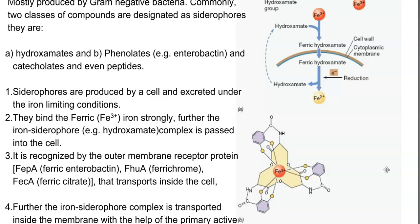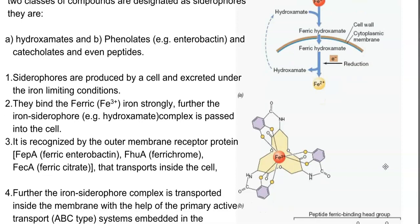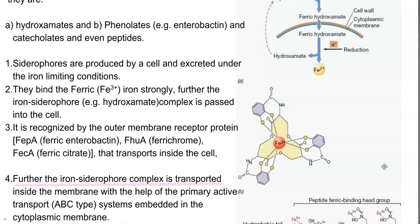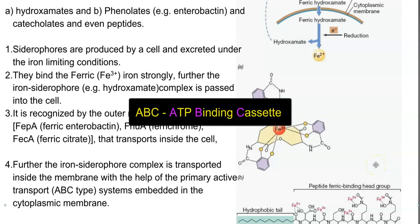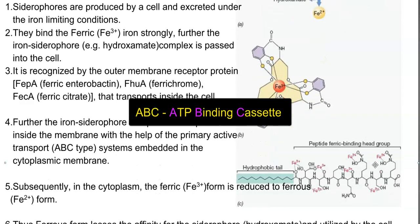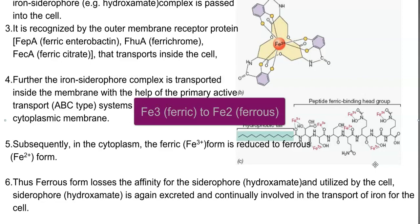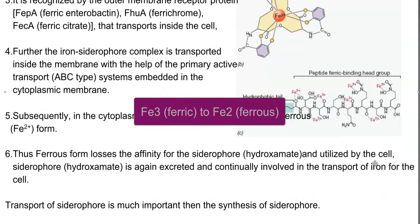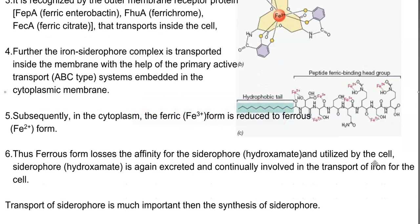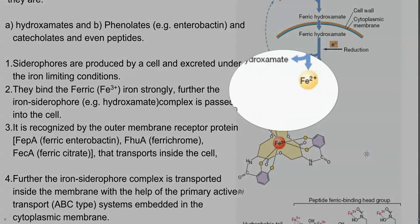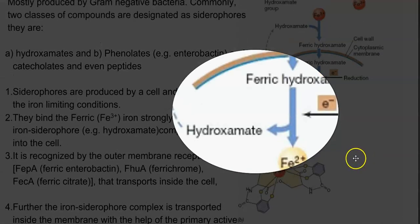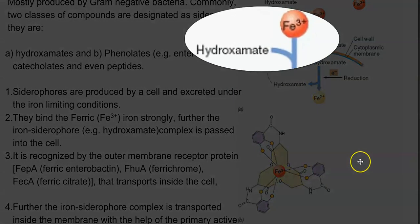These are the outer membrane receptor proteins involved in transport of siderophores. The iron-siderophore complex is then transported inside the cell membrane with the help of a primary active transport system — the ABC-type transport system embedded in the cytoplasmic membrane. Subsequently in the cytoplasm, the ferric iron is reduced into ferrous form and used by the cells. The ferrous form loses affinity for the siderophore, and the hydroxamate siderophore can be recycled to start a new cycle of iron acquisition.